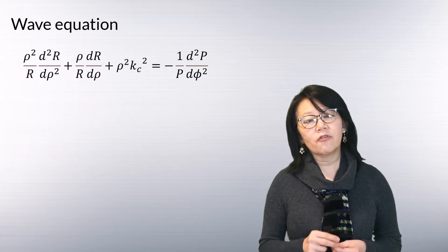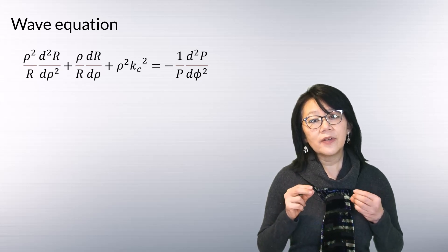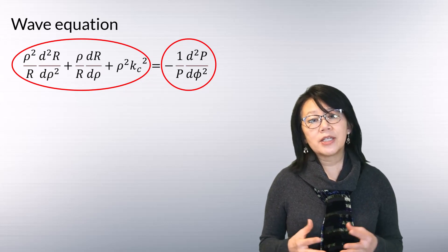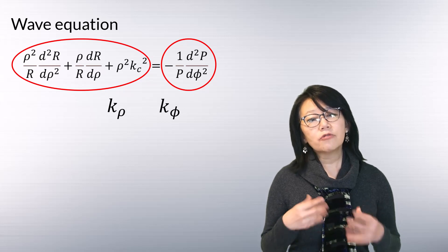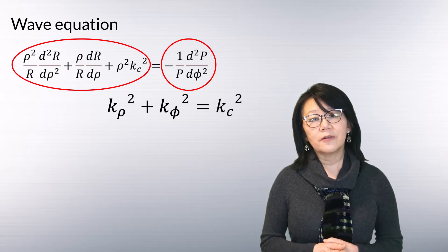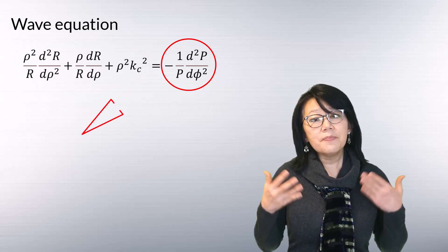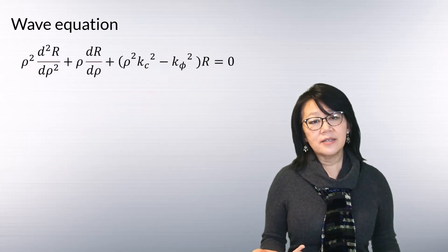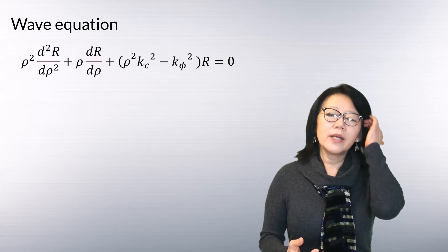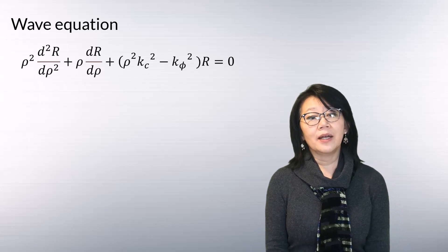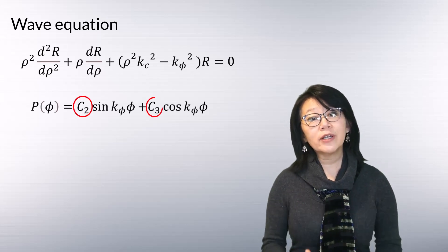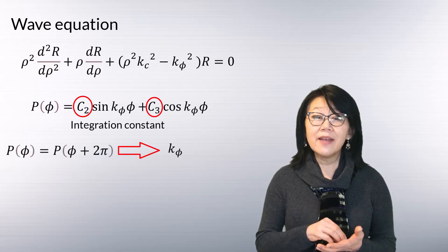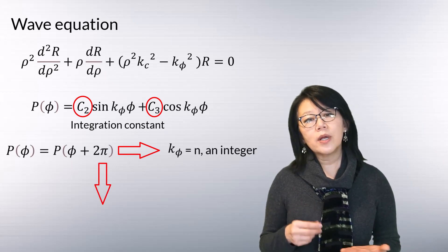A solution to this differential equation exists only if each side equals some constant. We define separation constants k_rho and k_phi, which are related to the wave number as shown. The right-hand side term in the equation is expressed accordingly, and the wave equation is modified. The general solution for the phi differential equation involves constants C2 and C3, and since this function must be periodic in phi, k_phi must equal some integer n.